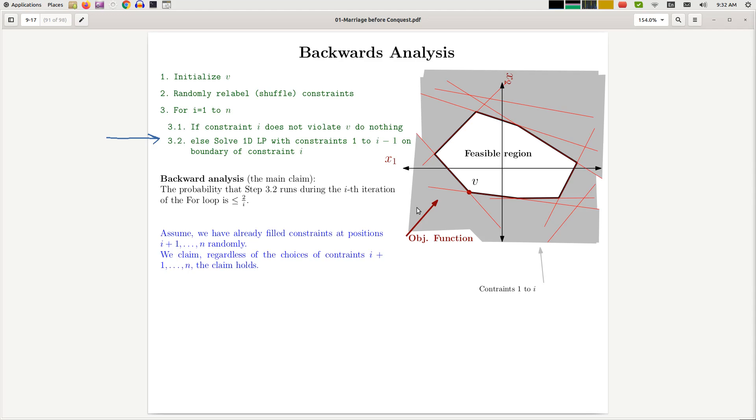And let's say these constraints look like this, and they create a feasible region like this, and they forbid this grey piece of the plane. So now the random procedure that fills out the constraint has to make a choice about the constraint number i. So from these constraints, it will pick one constraint to be at position number i.